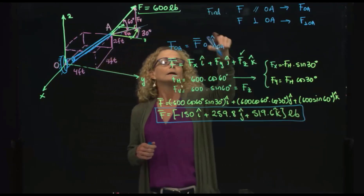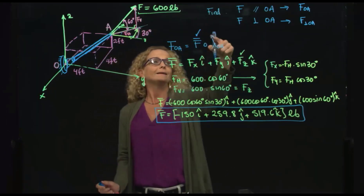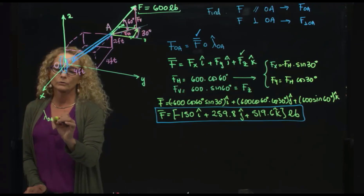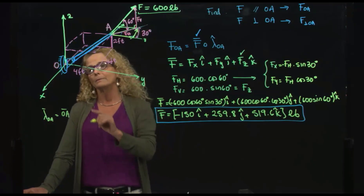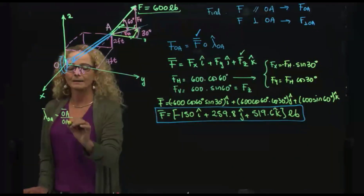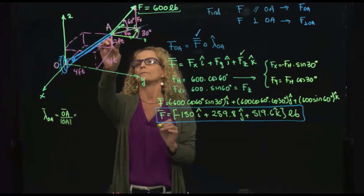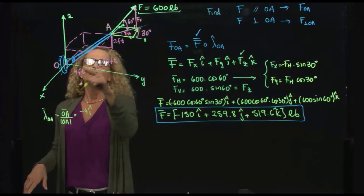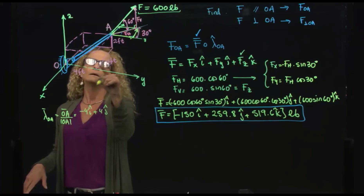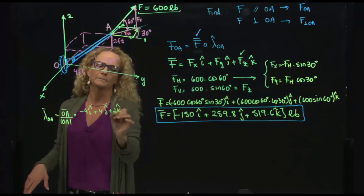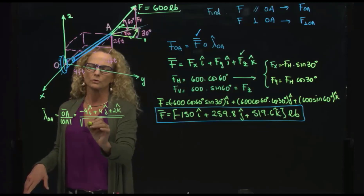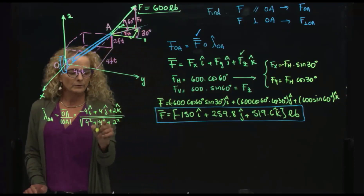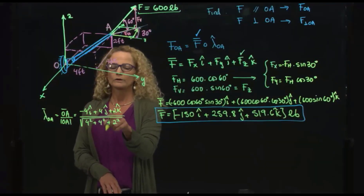Remember we are trying to find the unit vector along OA. A unit vector is always the position vector OA divided by its magnitude. We are given all the dimensions where point A is located — it is at negative 4 in I, positive 4 in J, and positive 2 in K, divided by the magnitude, which is the square root of 4² plus 4² plus 2² — that's 16 plus 16 plus 4 equals 36, so the magnitude is 6.